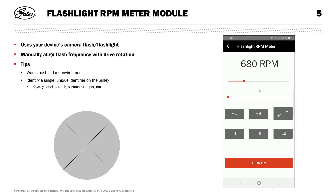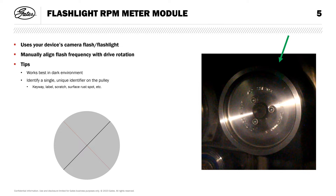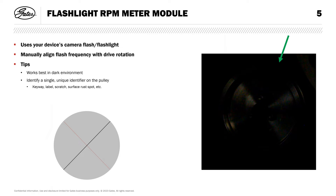Now I'll show an example of what a drive will look like once the speed and flash frequency are aligned. For this example, I've applied a small piece of reflective tape to my pulley to make the visualization obvious on camera.